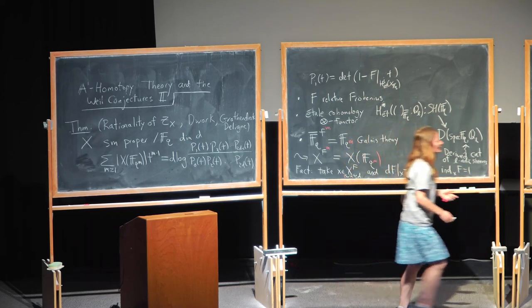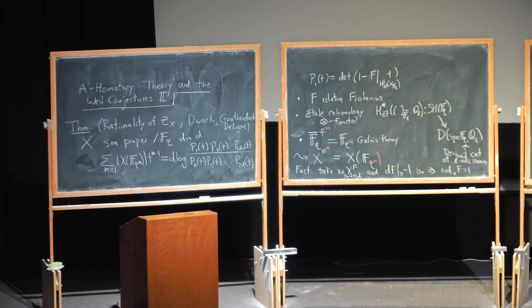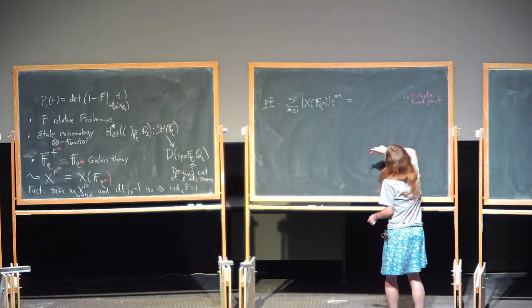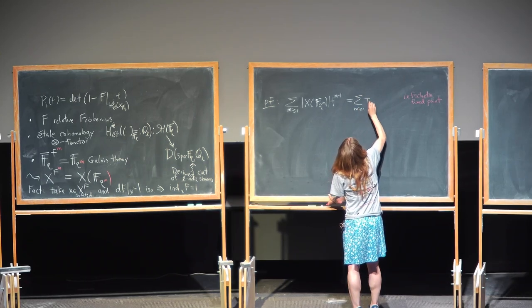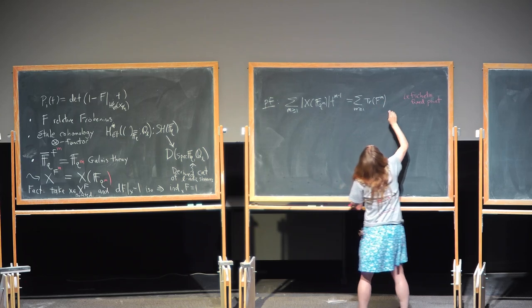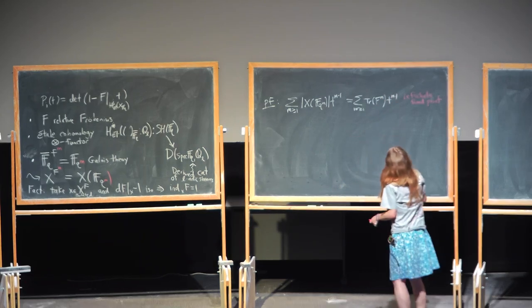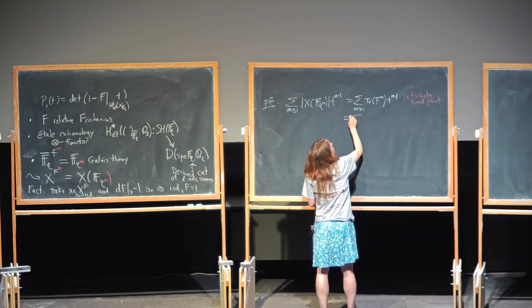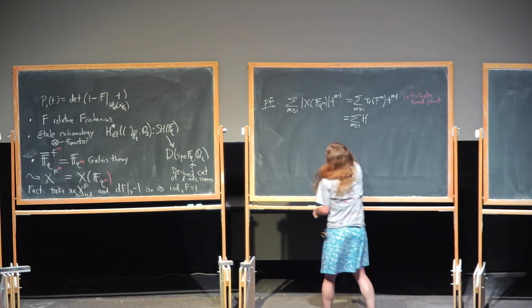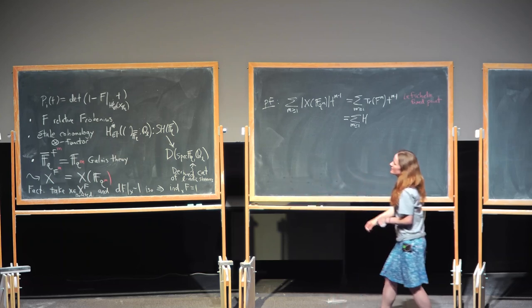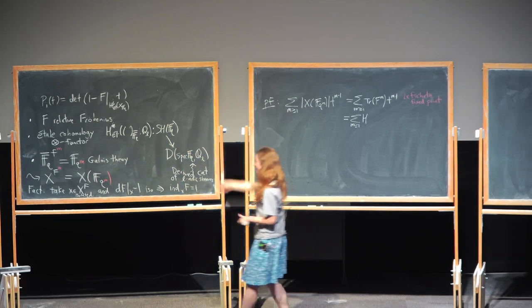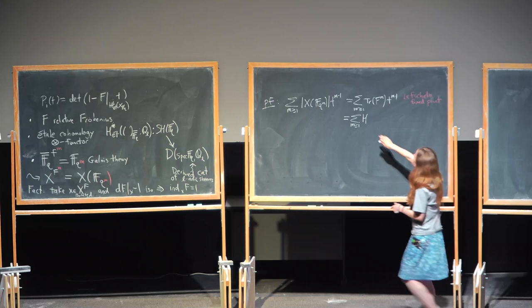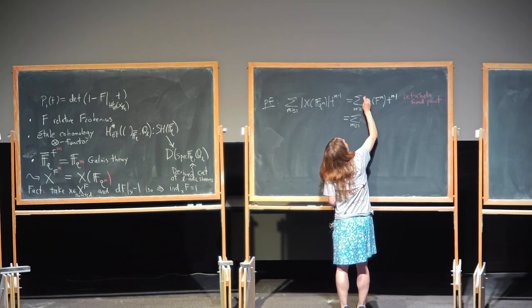We have a Lefschetz fixed-point theorem that we're going to invoke here. It says that if we want to know this integer, we can take the trace of F^m, T^{m-1}. Viewing this as an integer, that integer is the induced map by cohomology — of endomorphisms of 1 to endomorphisms of 1 — sending this here for free.